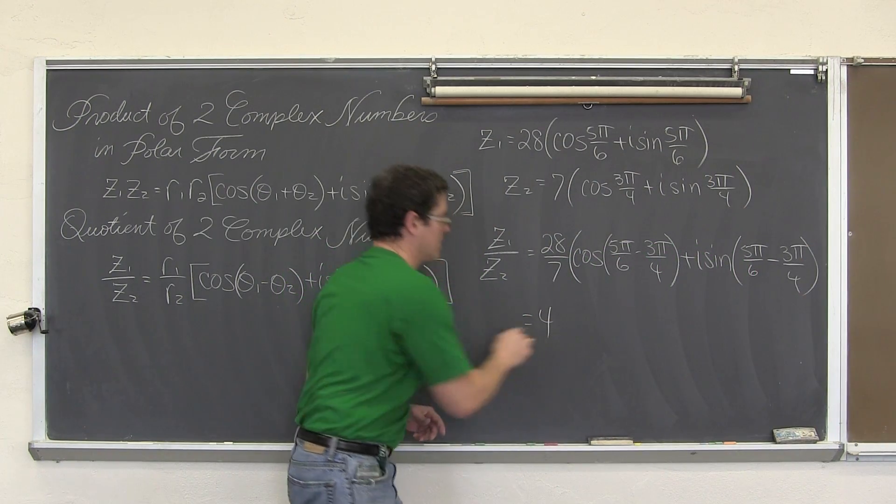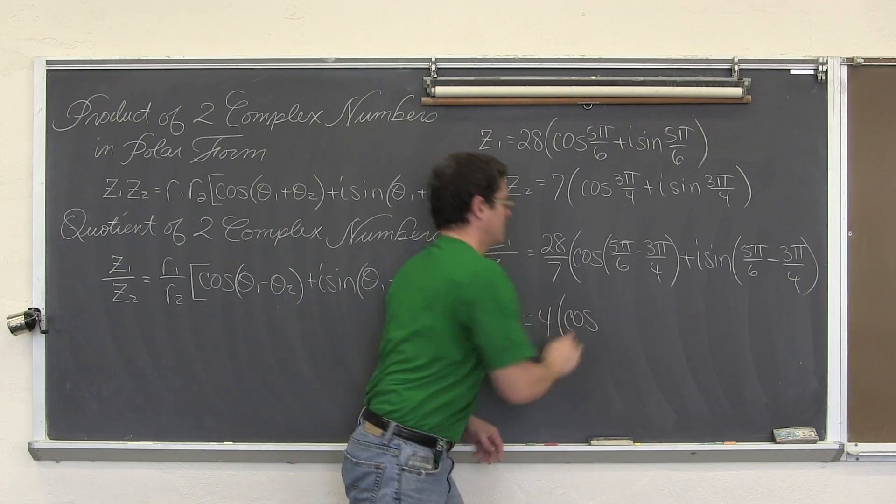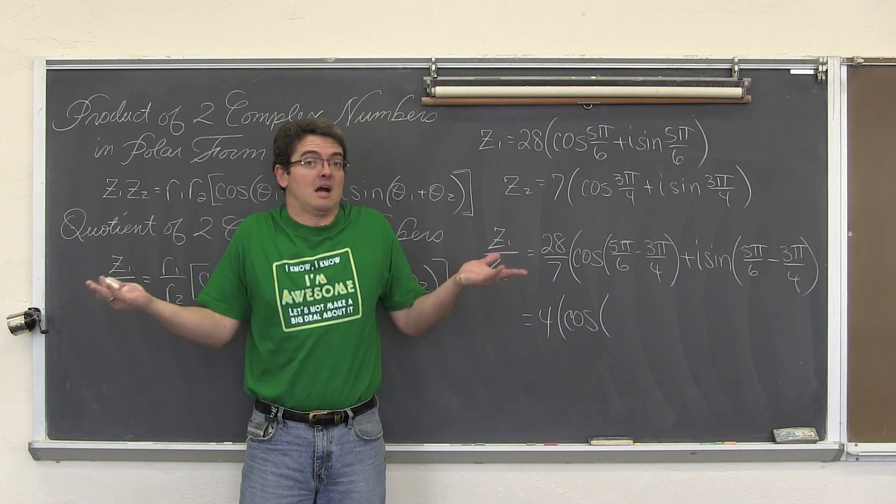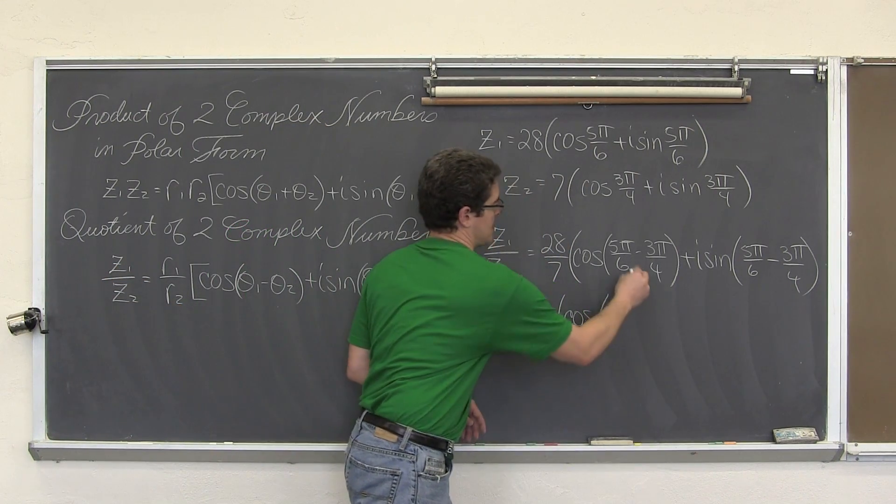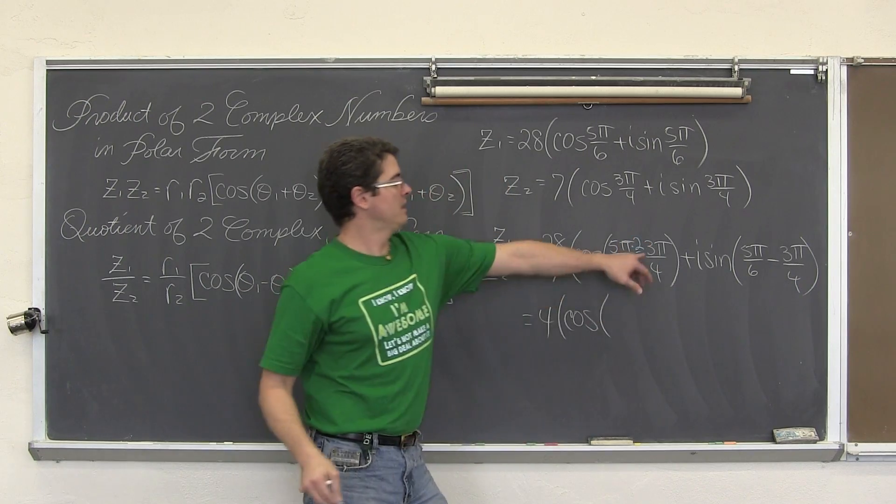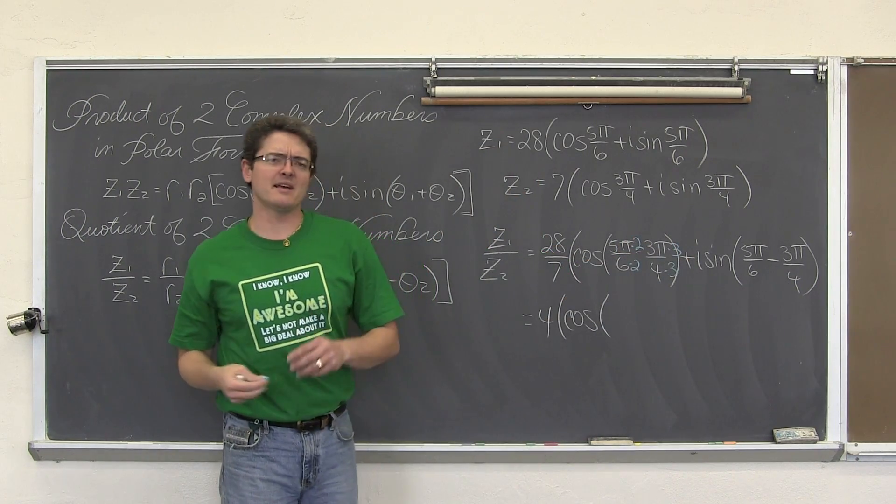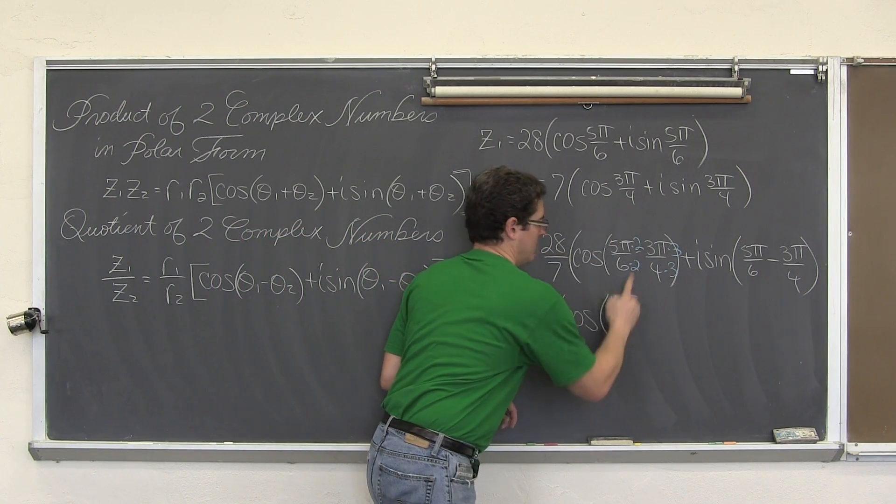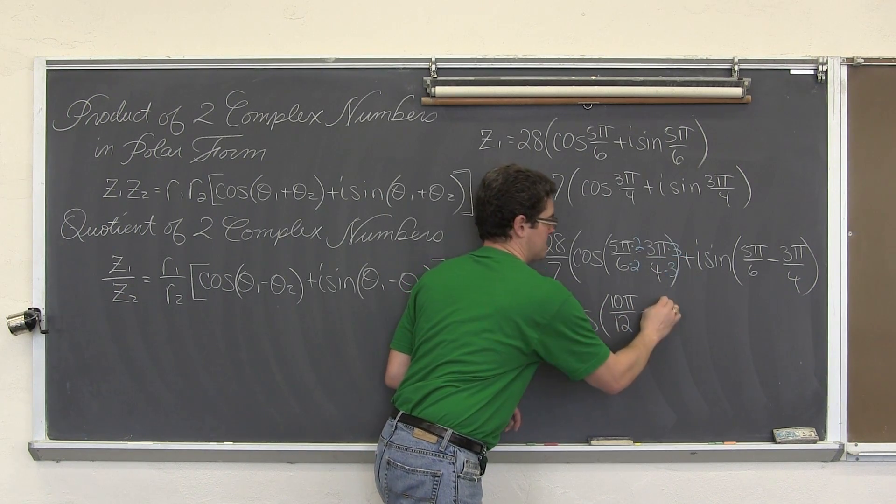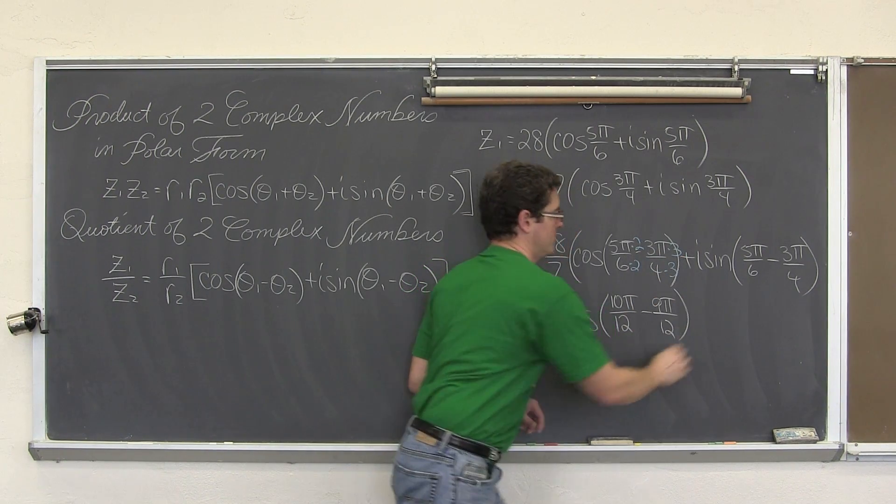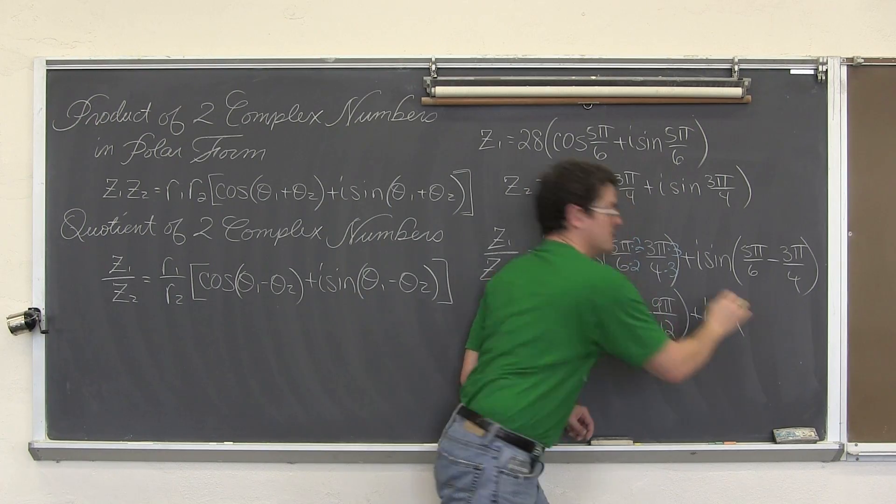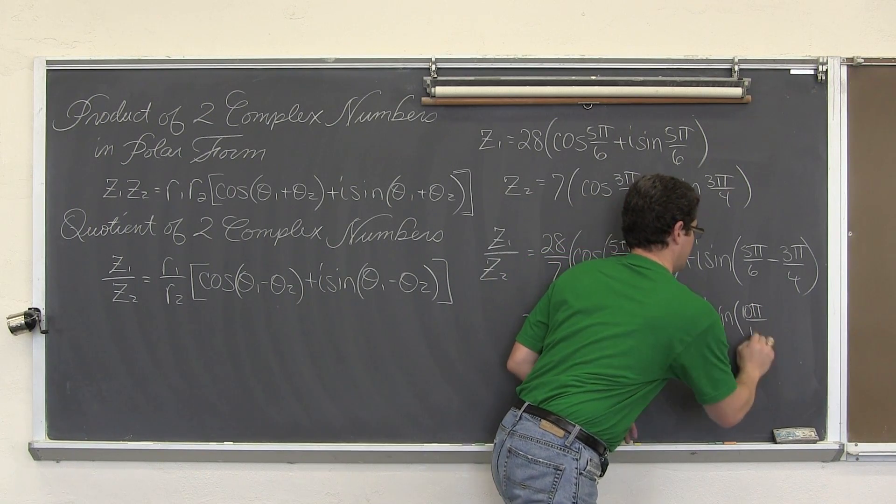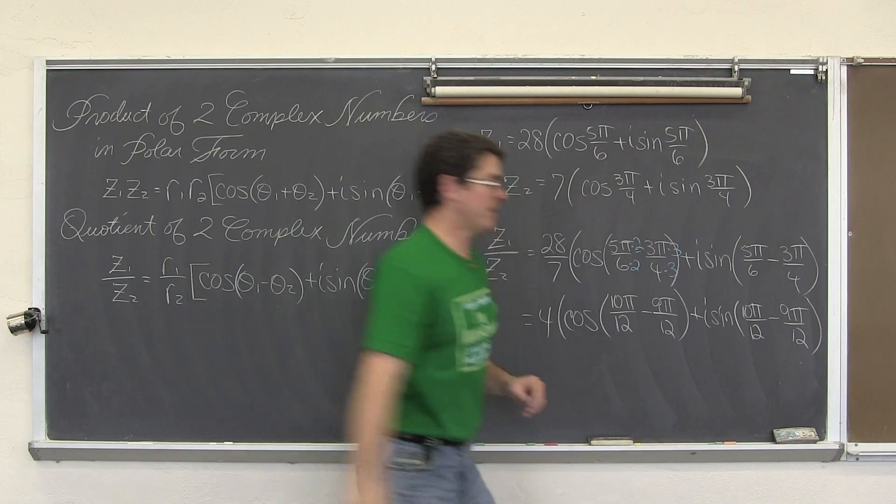We get 4 times cosine of... well, let me write this out. You can't subtract fractions unless you have common denominators. We're going to multiply the first by 2 and the second by 3 to get a common denominator of 12. That gives us 10π/12 minus 9π/12, plus i times sine of the same thing.